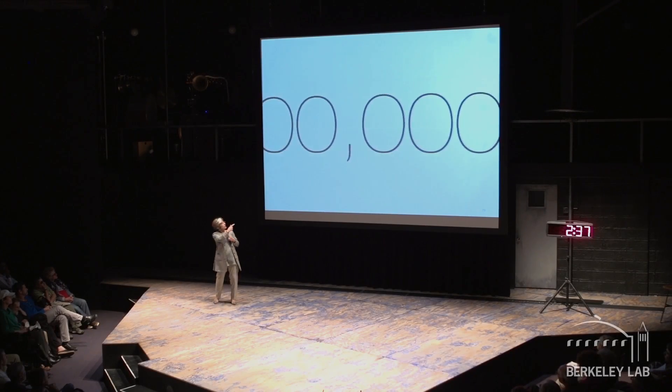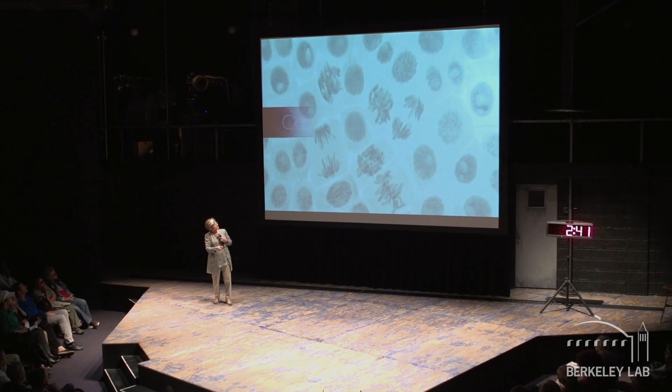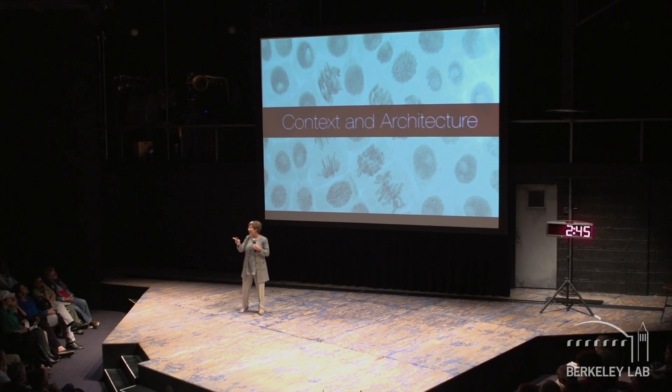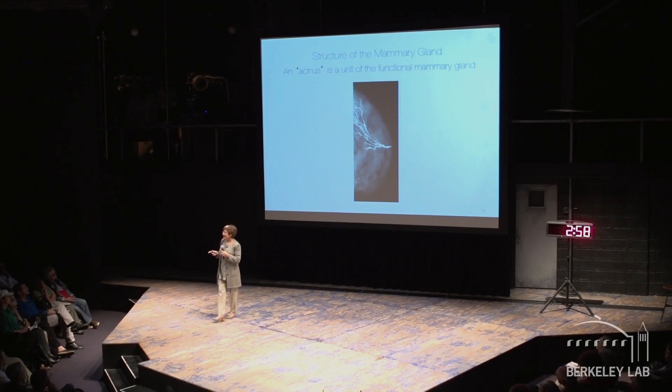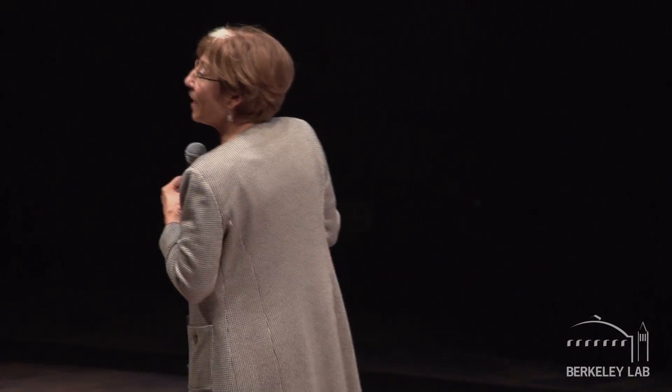They all have the same genetic information. Have you ever thought about what 70 trillion cells look like? Here is a human breast. We ask the question: how does this 70 trillion cells, all with the same genes, make your nose, make your finger, make your breast, and — for the gentlemen listening — make the prostate? How do they do it?